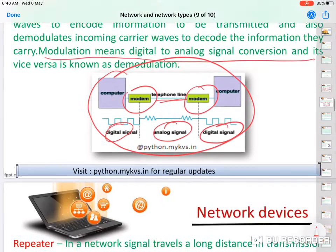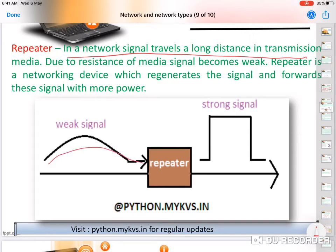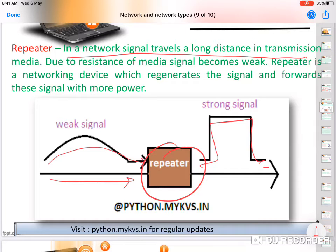A repeater is a network device used when a signal needs to travel a long distance. As a signal travels, it becomes weak over long distances. A repeater regenerates and amplifies the weak signal so that the data can reach its destination. It is also called a booster.